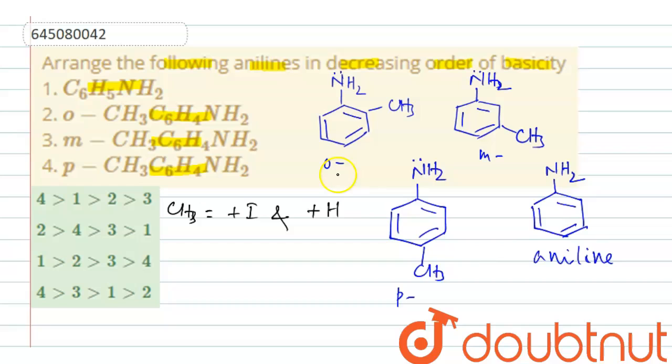Why? Because here hyperconjugation in ortho and para, hyperconjugation is operating. Let us write here in CH3, in orthotoluidine we are having plus I and plus H, in para also we are having plus I and plus H, in meta we are having only plus I. Meta position it won't work, our hyperconjugation will not work.